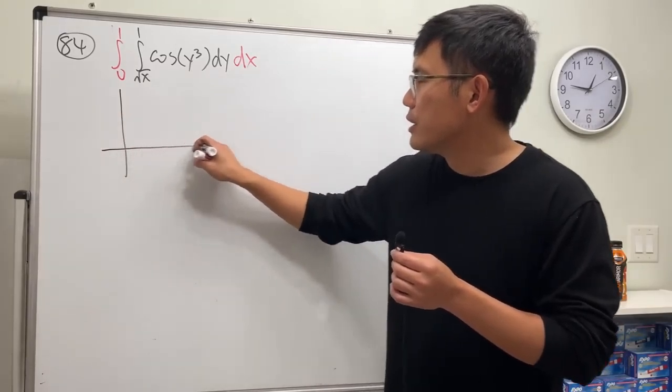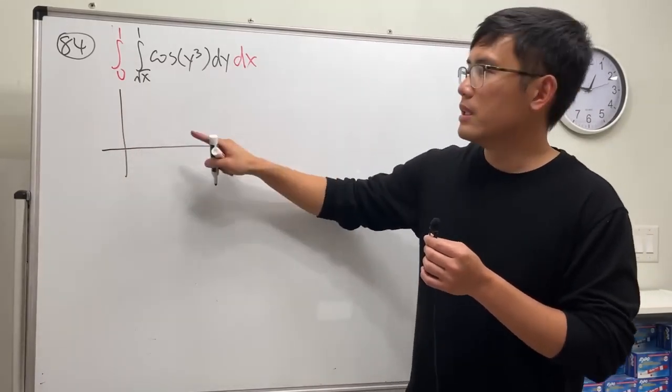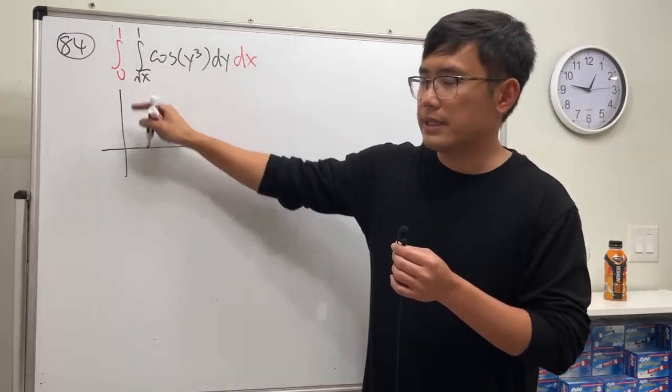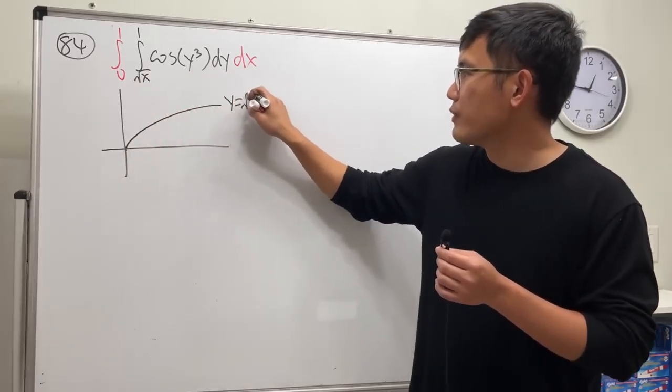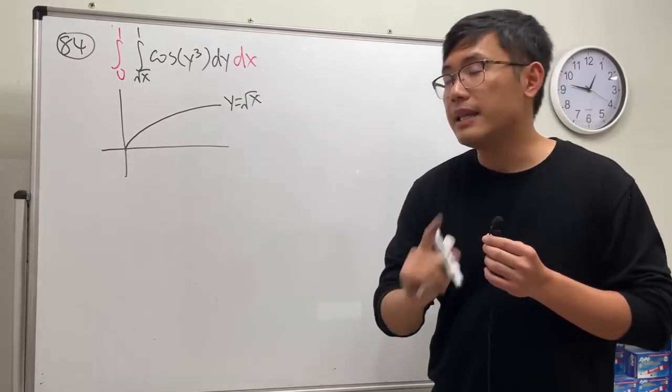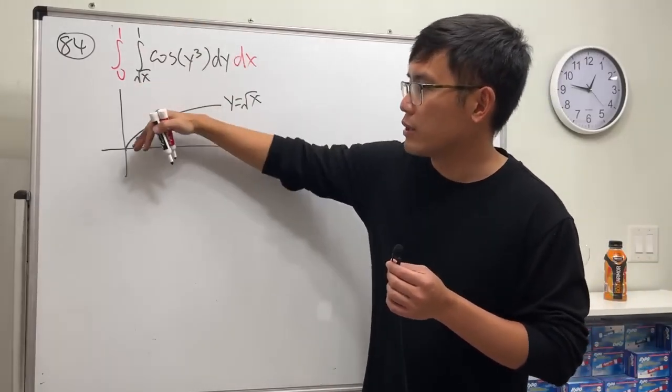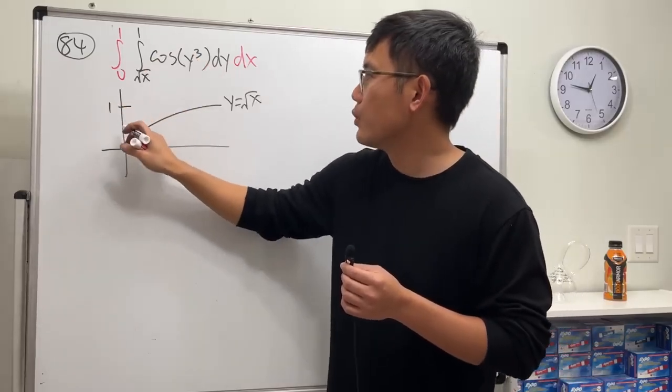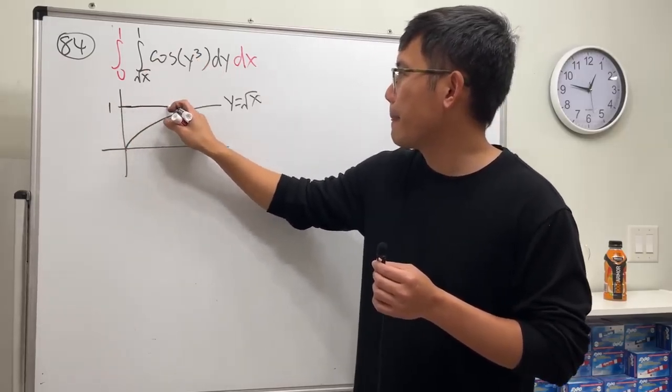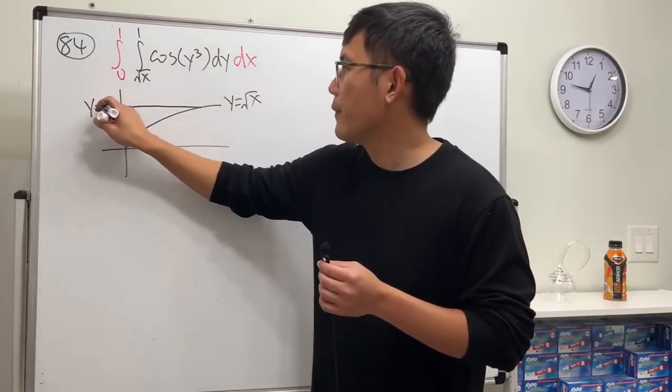Let's look at the region here. Y goes first, so y is square root of x. We look at this right here, y is square root of x, and then from bottom to top because of y. This is the bottom and we go up to the top, so we go like this: y is equal to one.